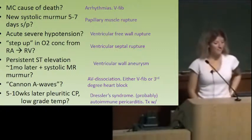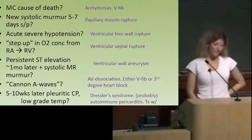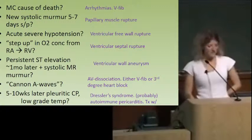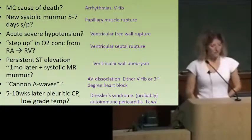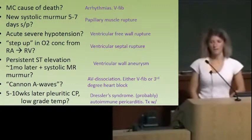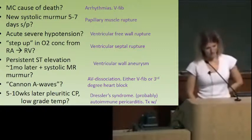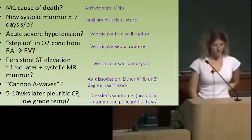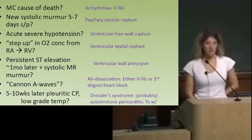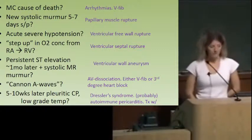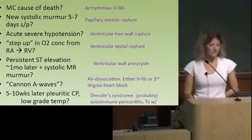Five to ten weeks later: pleuritic chest pain and a low-grade temperature — that's Dressler syndrome. This is thought to be an autoimmune cause of pericarditis, and we treat it with aspirin or NSAIDs.